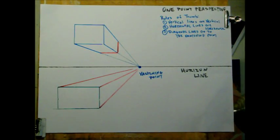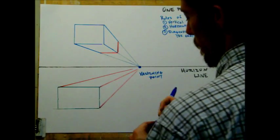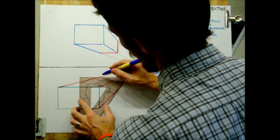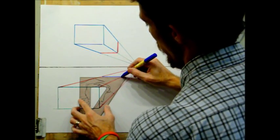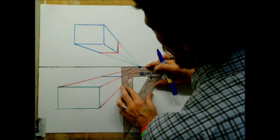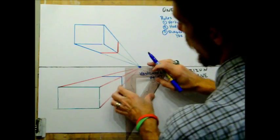And from the bottom inside to my vanishing point. Lastly, for this, I'm going to draw a horizontal line from the top diagonal to my middle diagonal. Where it intersects, I'm going to stop. And I'm going to draw a vertical line down to my bottom diagonal.